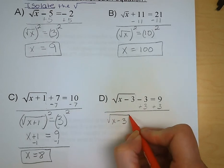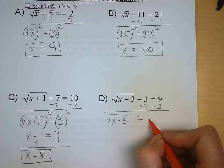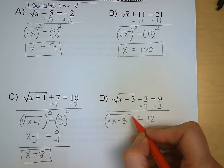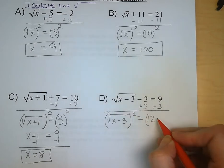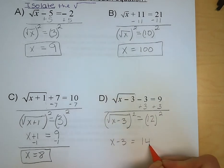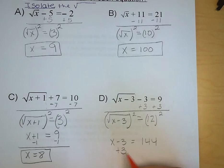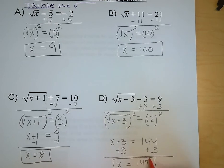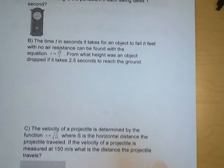And square root of x minus 3 is equal to 12. We square both sides. And x minus 3 is equal to 144. Add 3 to both sides, and x is equal to 147.